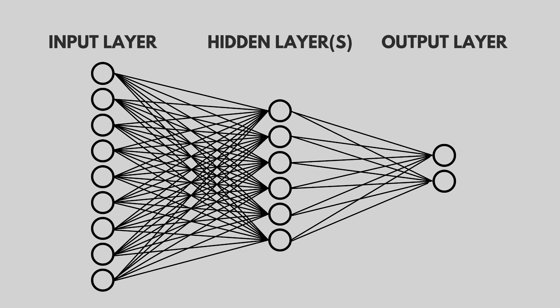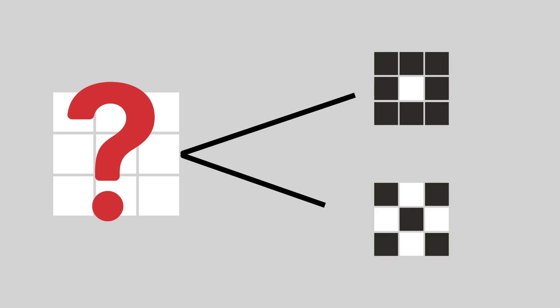You can think of it like a series of little decision makers working together to recognize a pattern, whether that is trying to recognize a face or identify anything handwritten. Let's use a simple example where a neural network is just recognizing whether a 3x3 pixel image is a 0 or a cross.